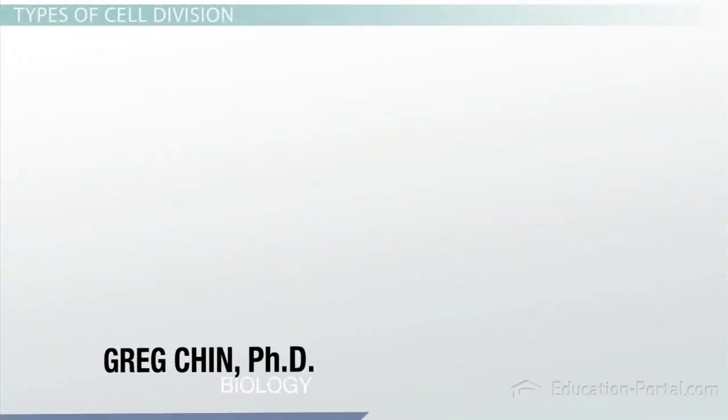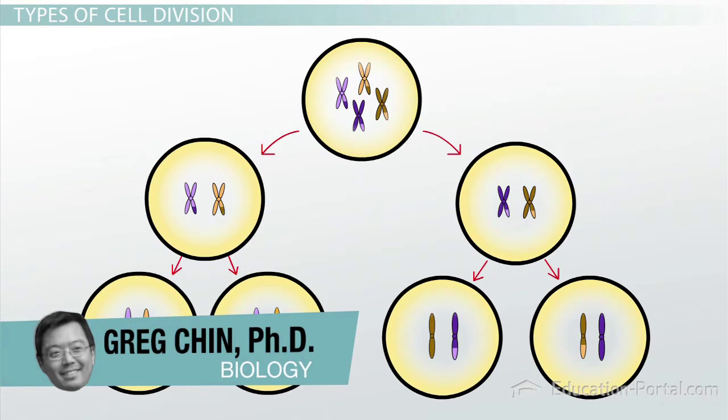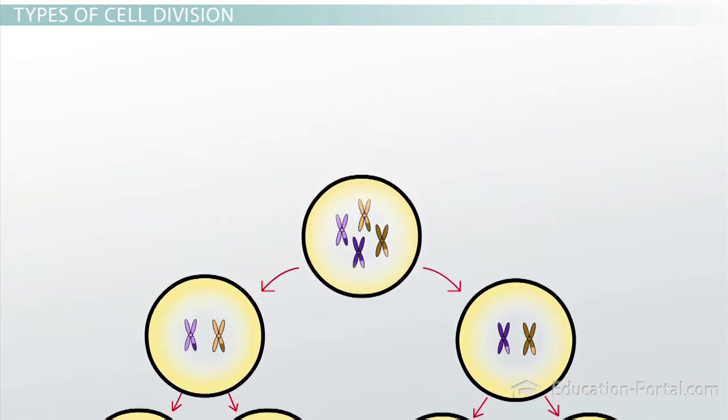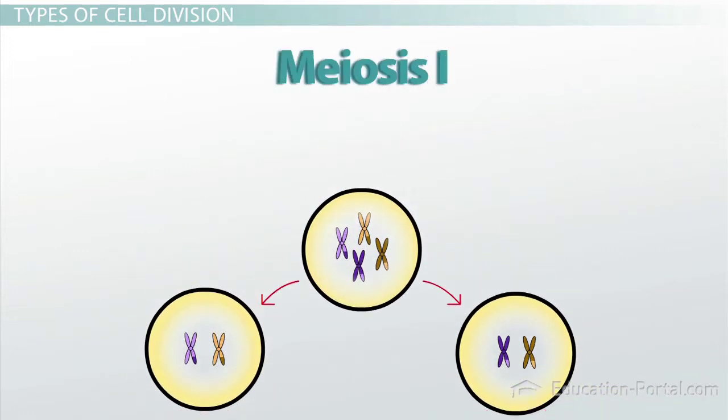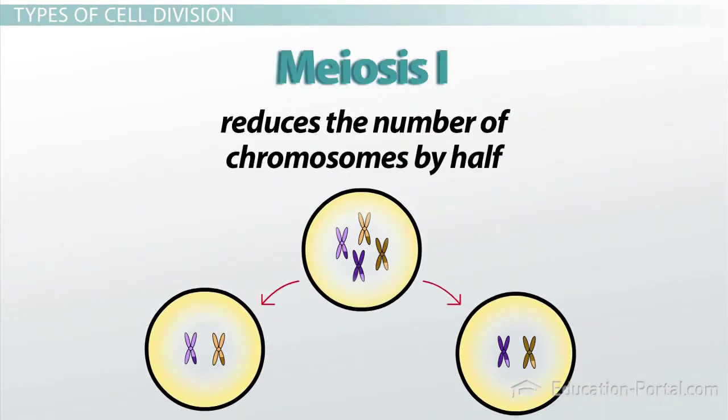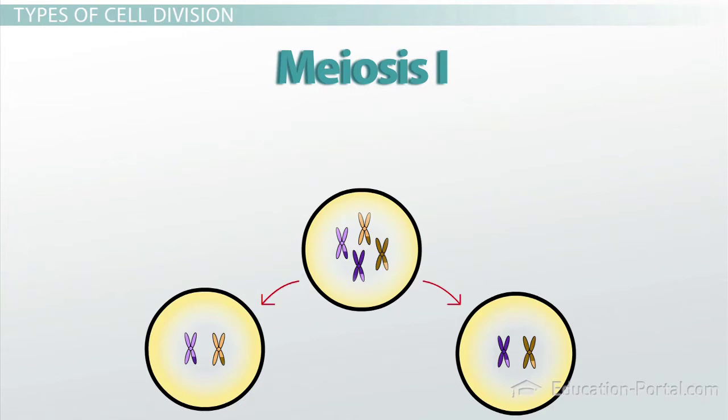To successfully complete meiosis and produce a gamete, a cell must undergo two rounds of division. The first round, conveniently known as meiosis I, reduces the number of chromosomes in the cell by half. The mechanisms the cell uses to accomplish this reductional division differs greatly from mitosis.